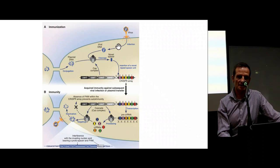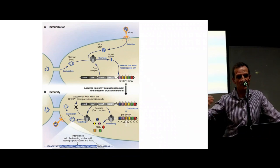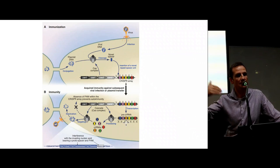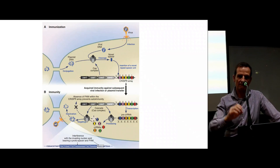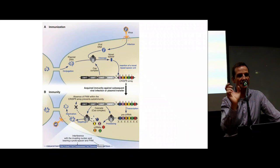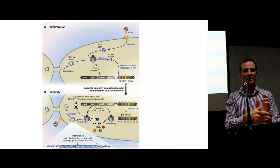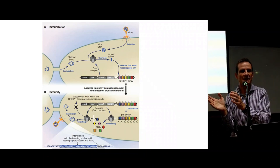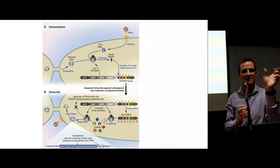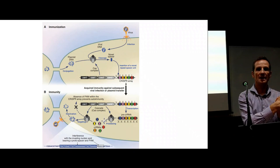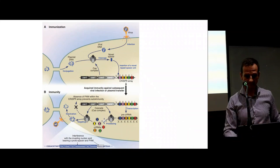If the bacteria survives the infection, it has a memory of what infected it by this unique sequence of DNA from the virus. If invaded again by the same virus, the whole system is reactivated — the tracrRNA, the CRISPR sequence, and Cas9 are created. They form a complex that looks for that same piece of DNA recognized previously, locks on, and Cas9 cuts the DNA. So it's effectively an immune system — like a vaccine for bacteria against invading viruses.